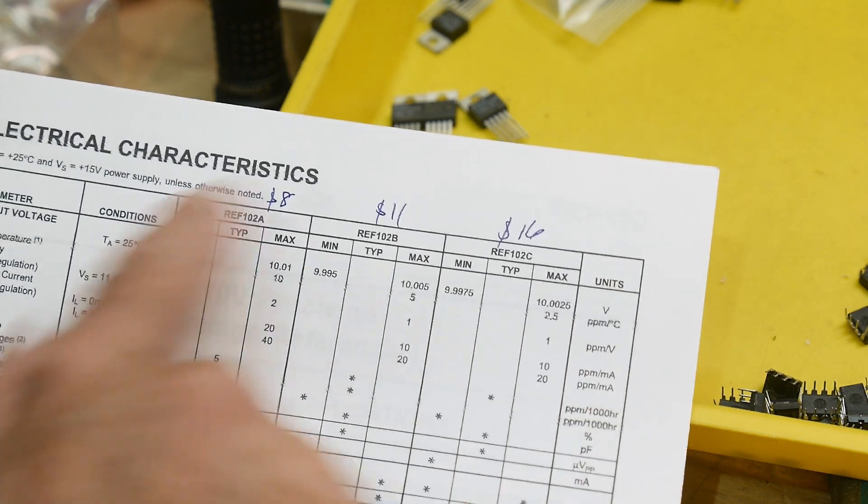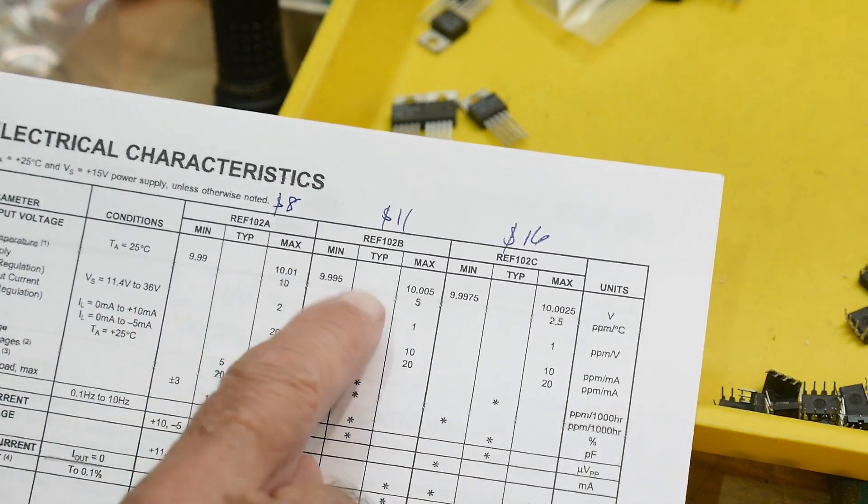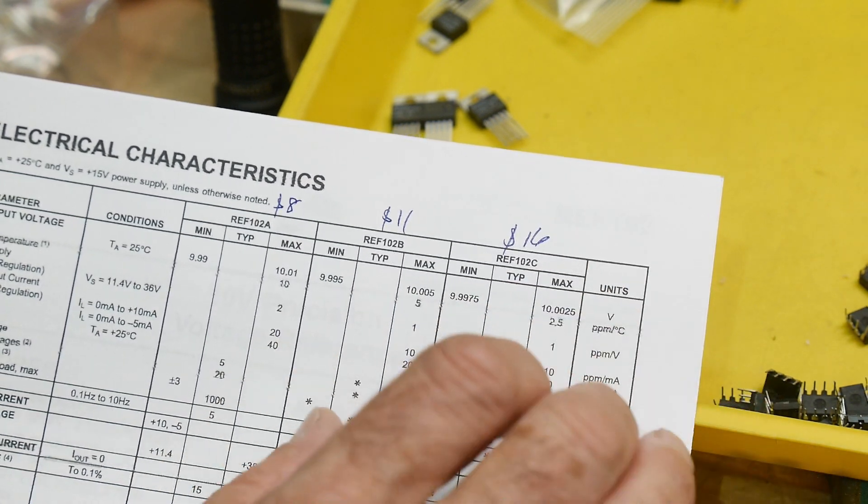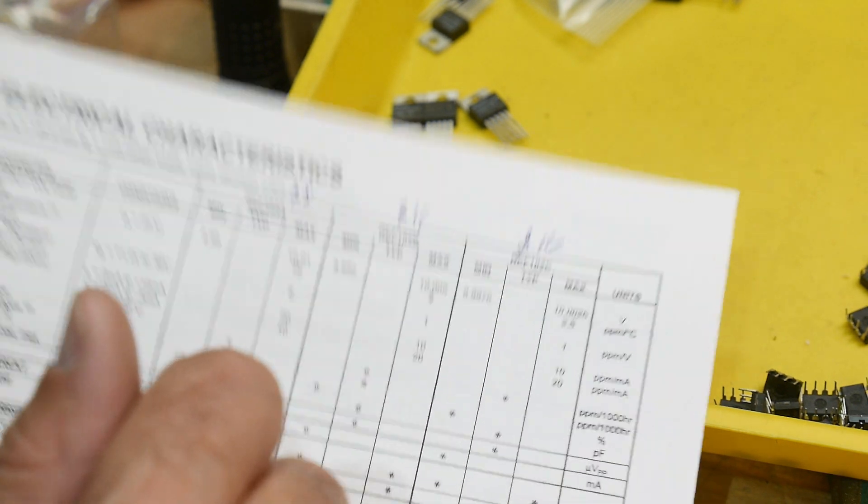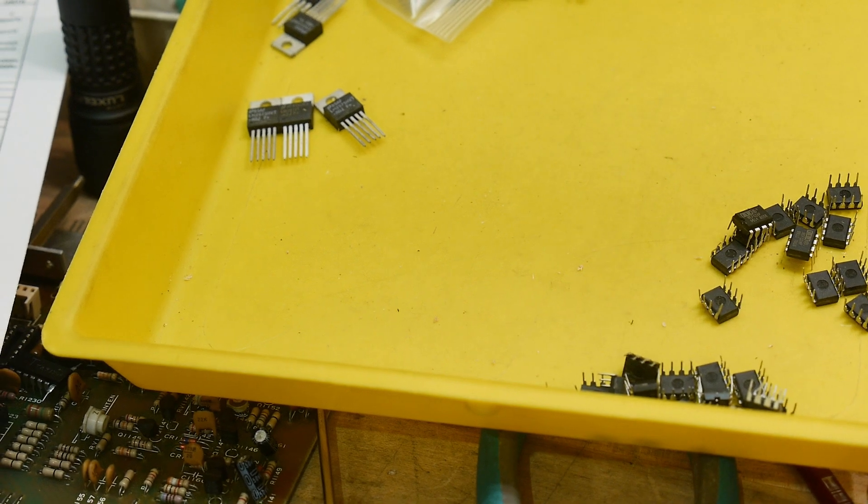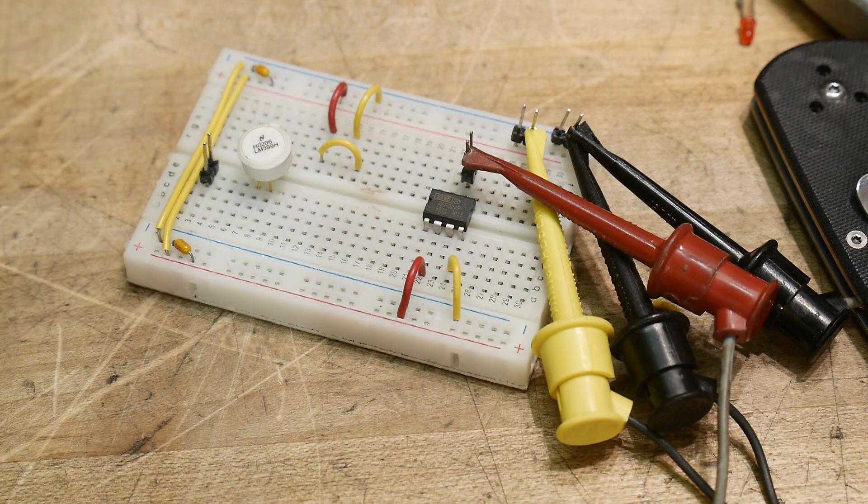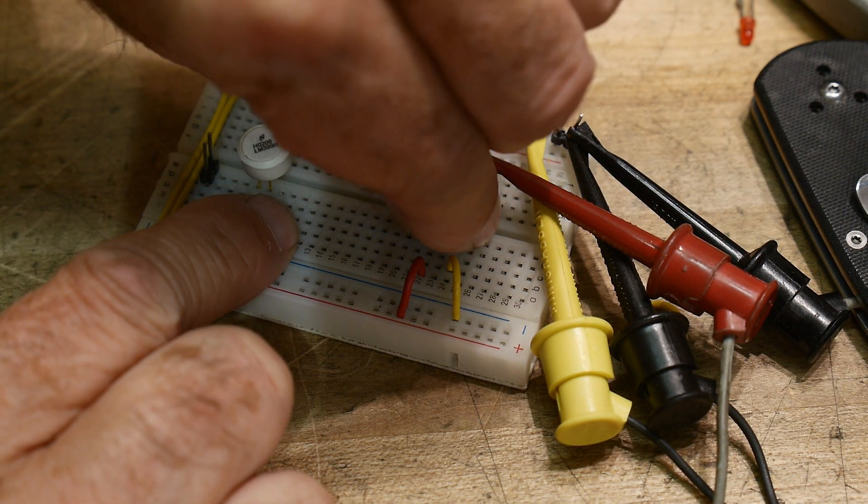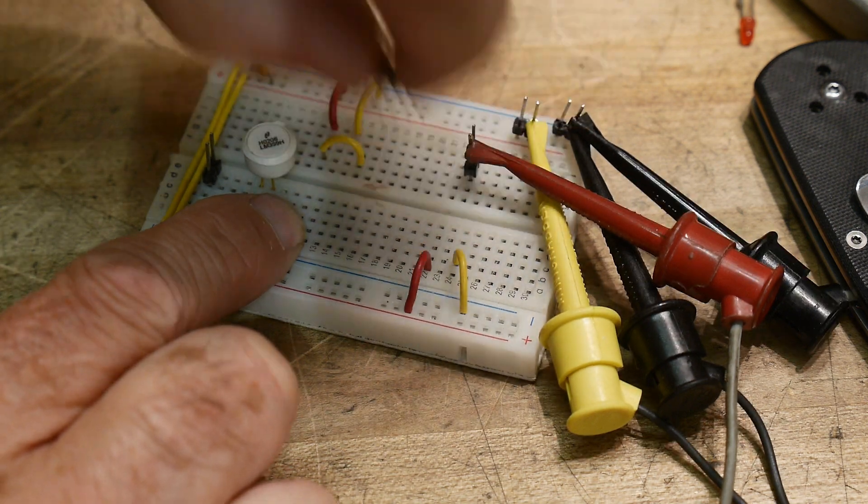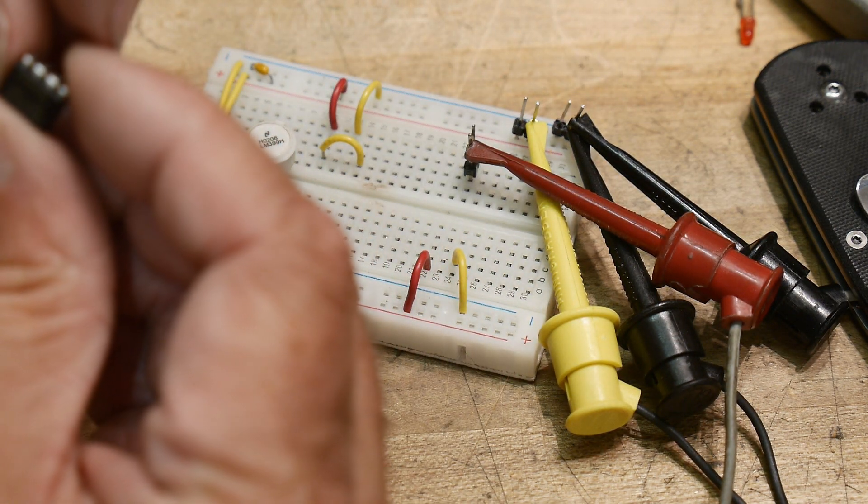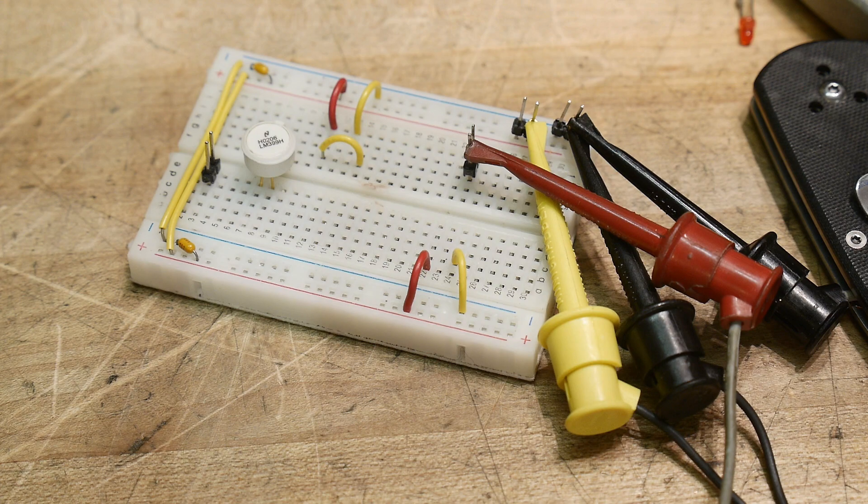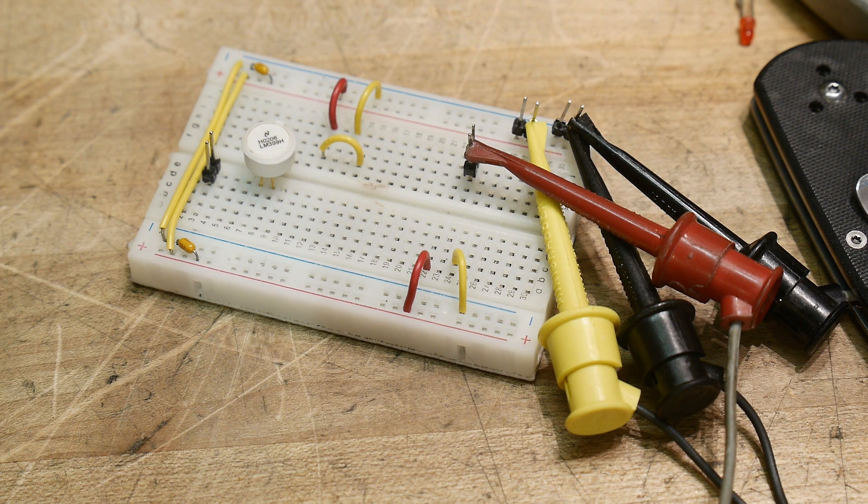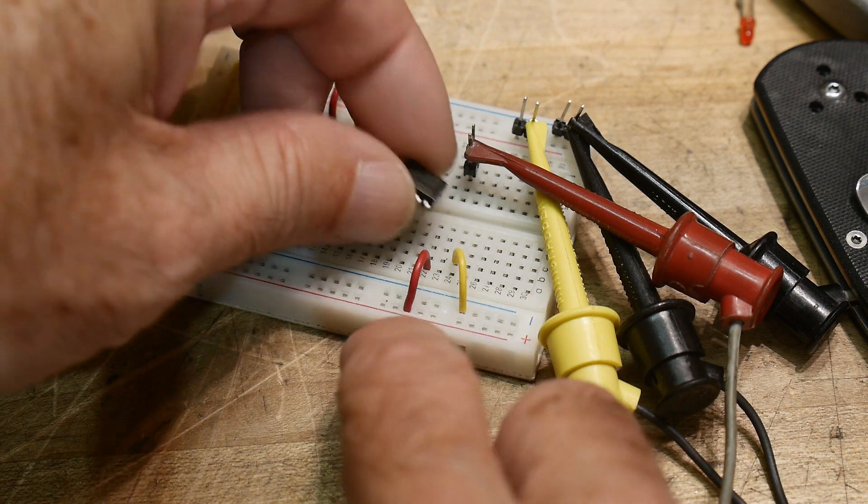So you must buy the C grade if you want that nice data sheet on the front page. Otherwise you're going to get one of these. I have some A parts and some B parts, but I don't have any C parts in my pile here. But we can pop in a B part and we'll give it a go. Should be zero zero five. So let's do that. Go down here, let me kill the power while I change the part out. And this is a REF— it's almost too small for me to see. Where's my magnifying glass? Yep, 102B. This is a B part. We'll pop him in.